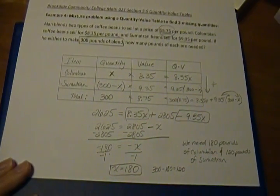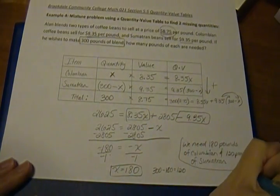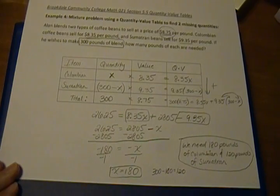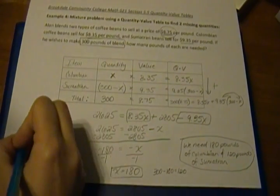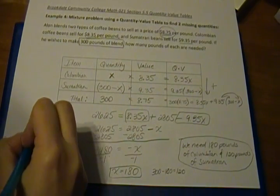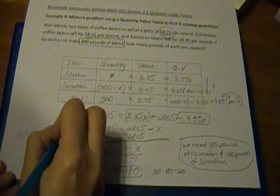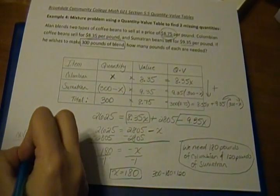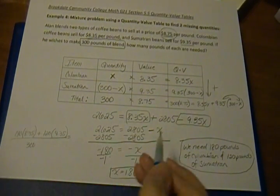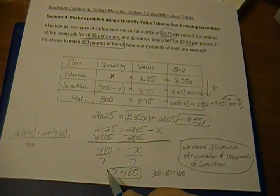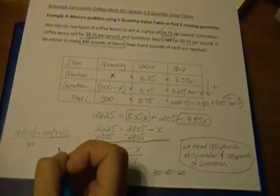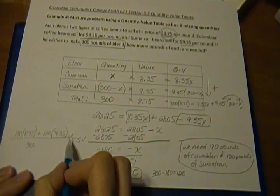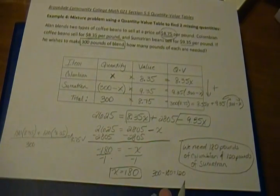And remember, because it's a word problem, the answer should be in words. So now I want to check my answer just to make sure that I got the right answer. So what do I do? I do the 180 times the $8.35 plus the 120 times the $9.35, and I divide that by the total pounds of beans that I'm mixing, which is 300, and I see if my average cost per pound is that $8.75. So when I do that and I punch it in my calculator, I do get 8.75. So my answer checks that my overall average cost is $8.75 per pound, and I'm done. I have my answer.